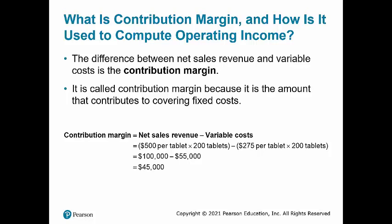Subtracting the total variable cost of $55,000 from net sales revenue of $100,000 gives a total contribution margin of $45,000.